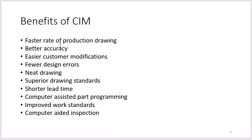Computer-assisted part programming improves work standards — you can check whether someone is following standards or not. Computer-aided inspection is also a benefit. In CIM, the computer is integrated with all departments of the industry, all centrally connected to a single computer, so anyone can see what production, design, manufacturing, marketing, and sales are doing.